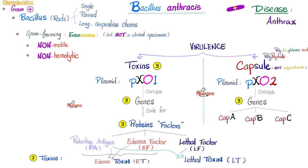Protective antigen, the middleman, plus edema factor equals edema toxin. Protective antigen plus lethal factor equals lethal toxin. So we have three factors and two toxins resulting from the combination of two factors together.